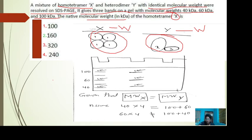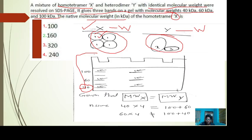Let's try to understand the question diagrammatically. The three bands are 100, 60, and 40 kilodalton, and we know that X is a homo tetramer. Let's consider one subunit of X is 40 kilodalton. If one subunit of X is 40 kilodalton, then four subunits will be 160 kilodalton.